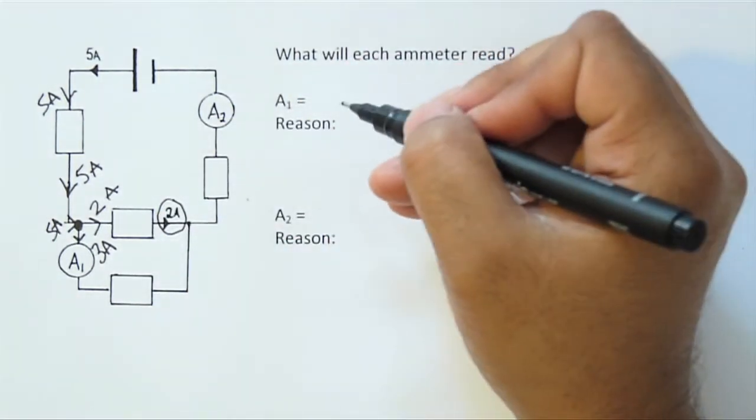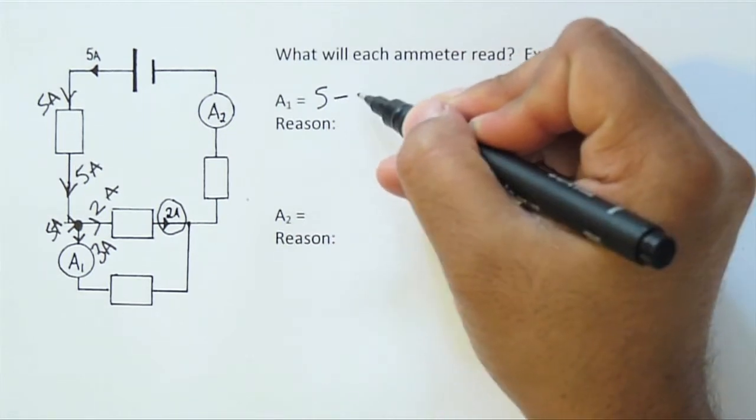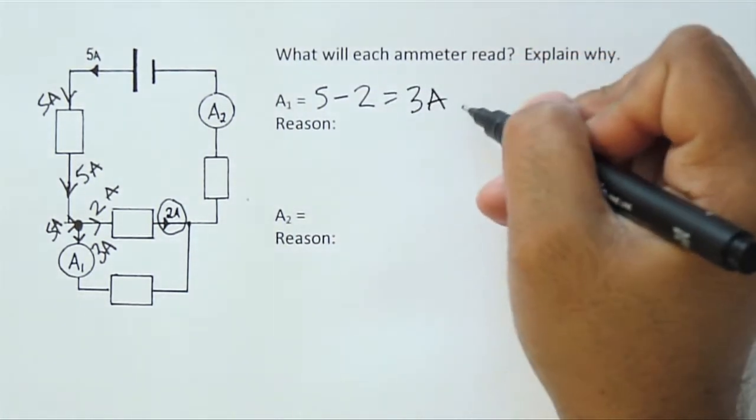So A1 is equal to 3 amps, and we can write A1 equals 5 minus 2 equals 3 amps.